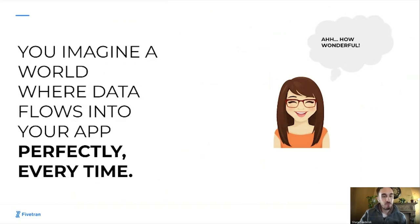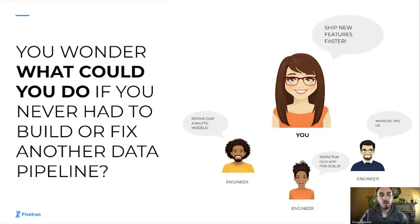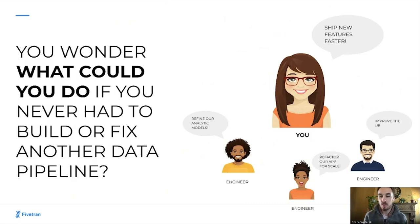You imagine a world where data flows into your app perfectly every time — how wonderful would that be? And you wonder: what could you do if you never had to build or fix another data pipeline? Your engineers are thinking they can refine analytic models and produce even better predictions. Another engineer is thinking that as the customer base grows, you'll need to refactor the app to scale. Another engineer wants to improve the user interface and front end. And you, as the product manager, are saying: we can ship new features that are important to customers and prospects faster.